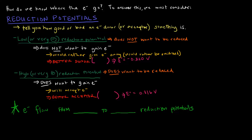If you have a low or very negative reduction potential, that means that particular species does not want to be reduced. Reduction is the gain of electrons, so if something has a low reduction potential, it doesn't want to gain electrons. Instead, it would rather give electrons away — that is, it would want to be oxidized. So if it doesn't want to gain electrons and would much prefer to give them away, it's considered a better electron donor.